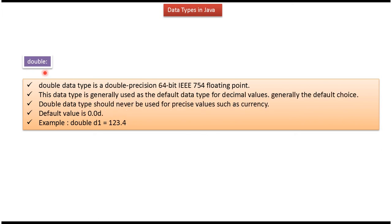Sixth data type is double. Double data type is double precision 64-bit IEEE 754 floating point, and default value is 0.0d. Here you can see how to declare double.